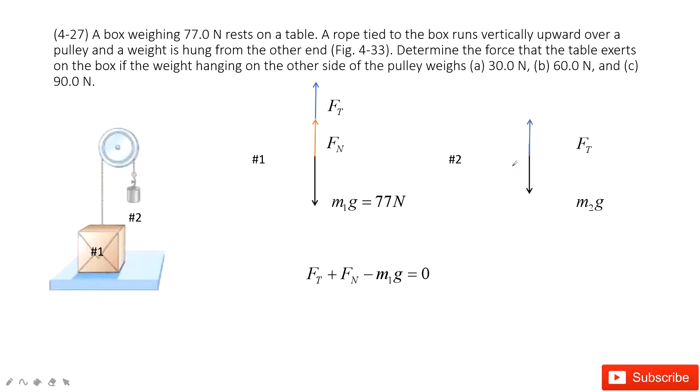The number 2, we look at it. We see Ft minus M2g equals 0. Agree? And Ft and Ft are equal. Therefore we can get the normal force. The table acts on number 1 is M1g minus M2g. And then we are done.